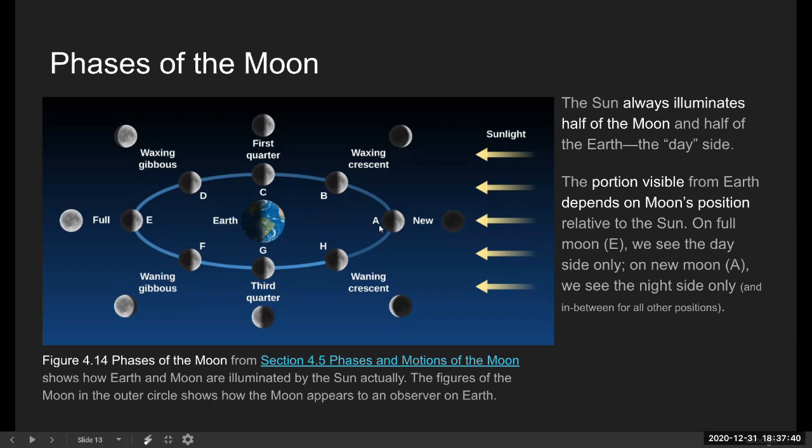And as the moon orbits into the position where more proportion of this lit side is visible from earth, it becomes crescent. And sometimes people call this half moon. Half moon is not a thing. We call this first quarter, because it's the first quarter of a cycle. And then, as more of the lit side is visible, it becomes gibbous and the full moon.